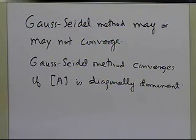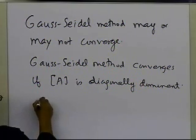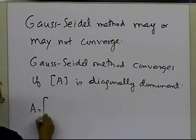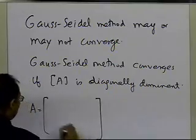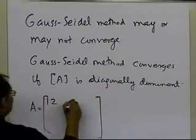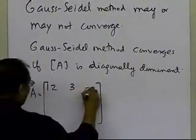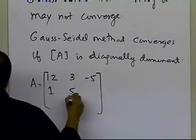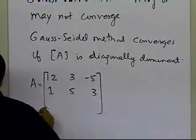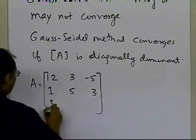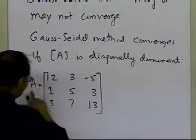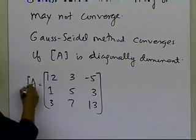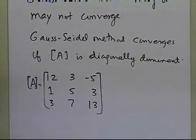The Gauss-Seidel method may or may not converge. What does it mean that A is diagonally dominant? If you look at A for the first set which we had — it's 12, 3, minus 5, and we have 1, 5, and 3, and 3, 7, and 13. This is the coefficient matrix for the first set of equations when we wrote it, which converged.